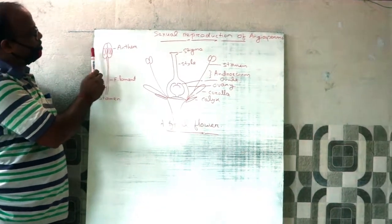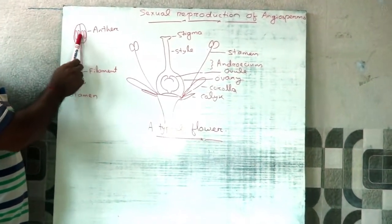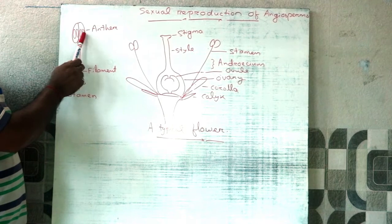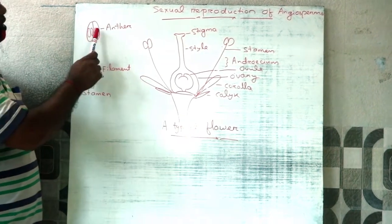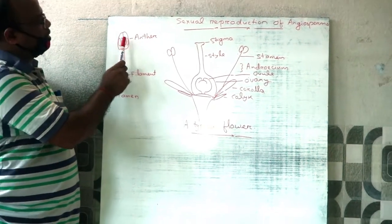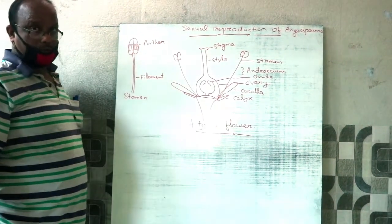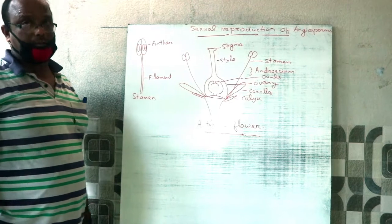Usually, the Anther has two lobes. Each lobe contains two Microsporangia. Each Microsporangium contains many microspores, or pollen grains.